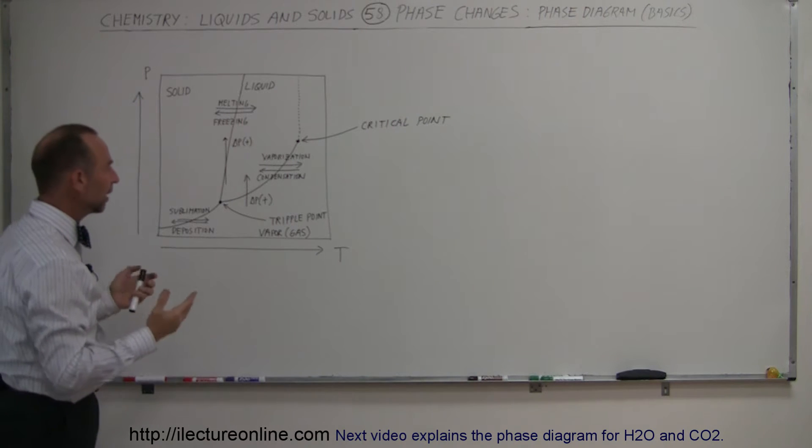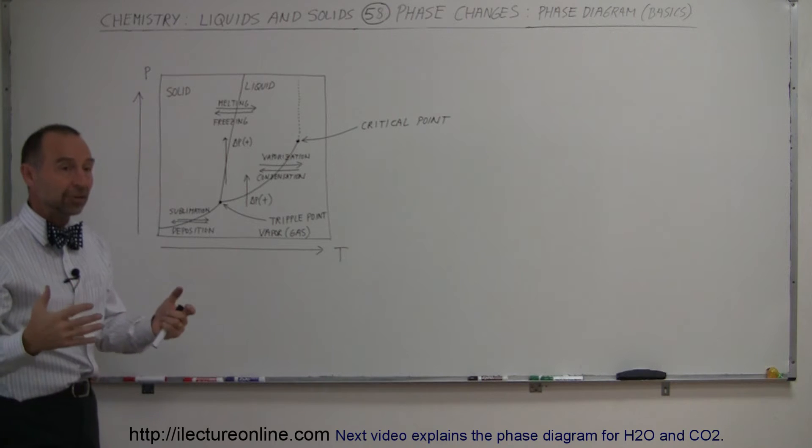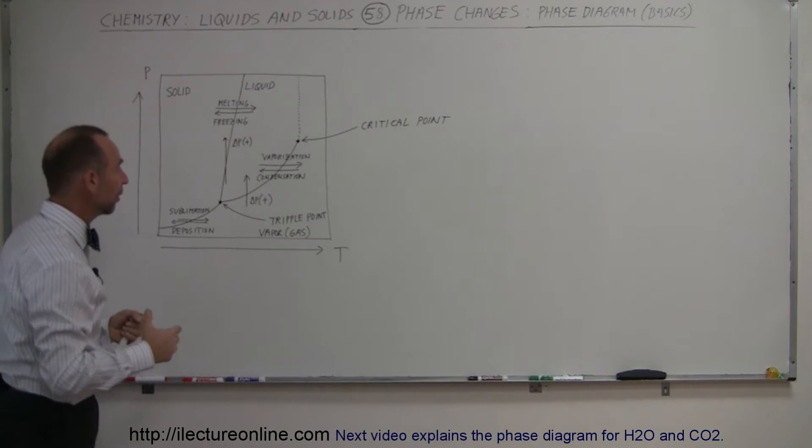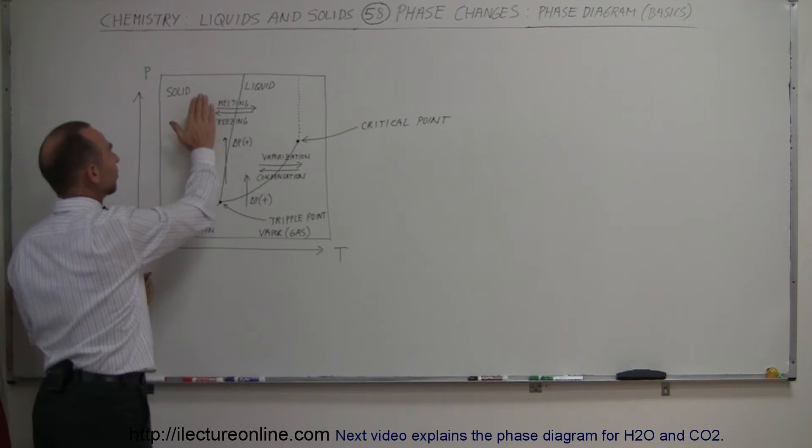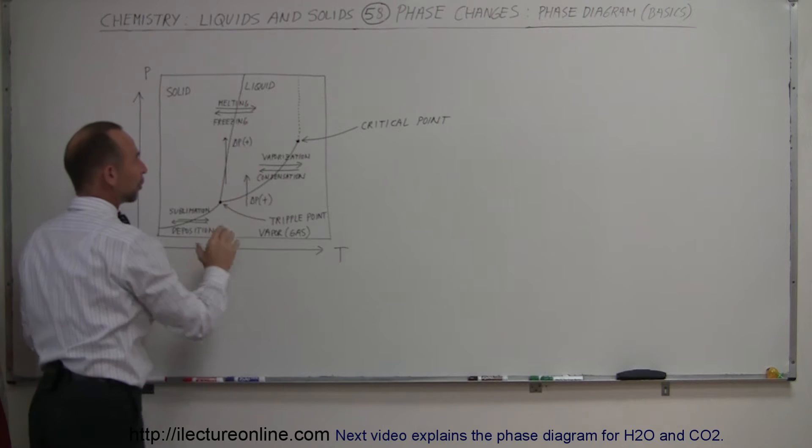Substances and elements do occur in nature in three different phases. They have the solid phase, the liquid phase, and the vapor or gas phase.